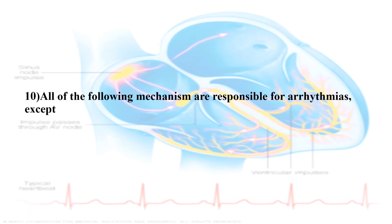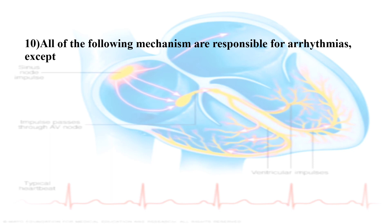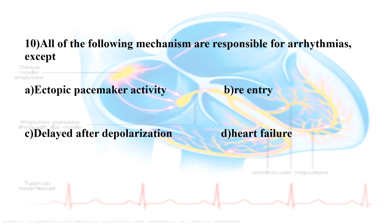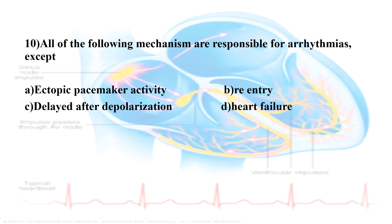Tenth question: All of the following mechanisms are responsible for arrhythmias except? The options are: Option A, ectopic pacemaker activity; Option B, re-entry; Option C, delayed after-depolarization; Option D, heart failure. Heart failure is not a mechanism of arrhythmia — it is a consequence, not a cause. So the correct answer is heart failure.